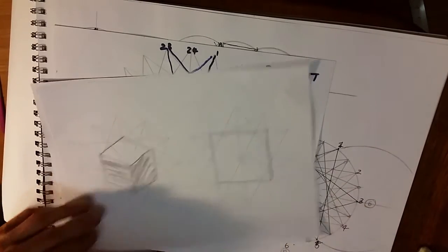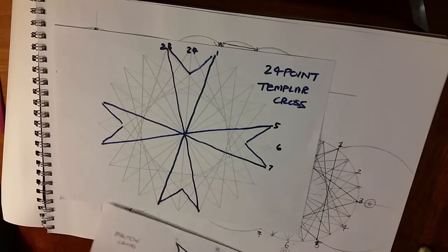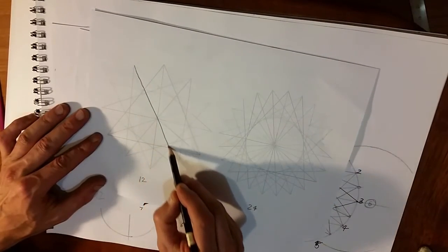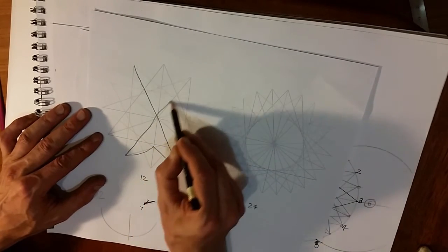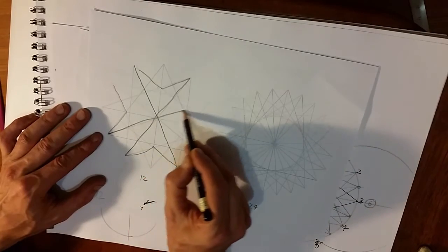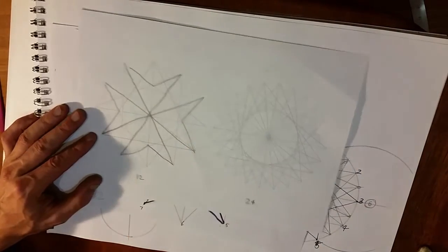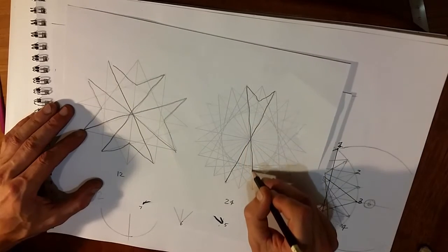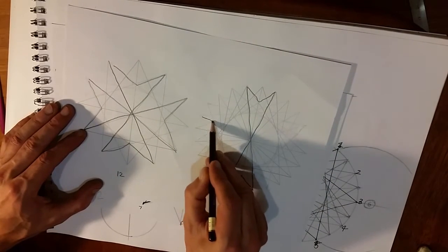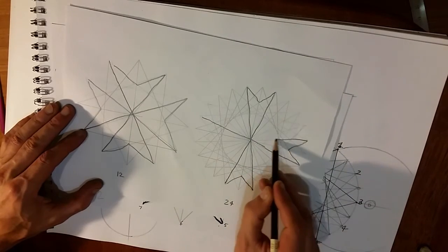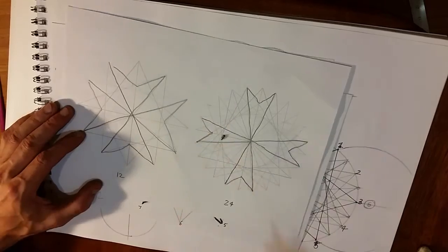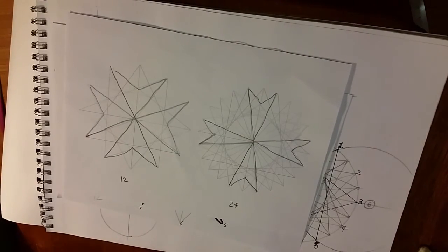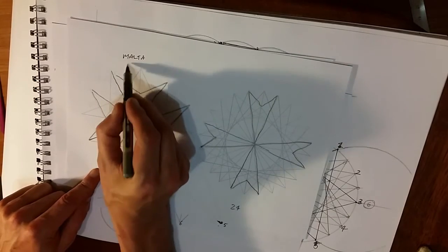And just to finish off the Maltese cross, Templar cross, 12-pointed and 24-pointed. Maltese cross, to finish off the Maltese cross, and to fall across, to finish off the Maltese cross.